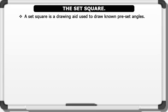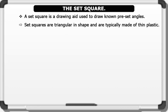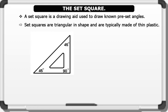4. The set square. A set square is a drawing aid used to draw known preset angles. Set squares are triangular in shape and typically made of thin plastic. There are two main types of set square. One has an angle of 45 degrees, and the other has an angle of 30 and 60 degrees. The 45 degree set square also has a 90 degree angle.